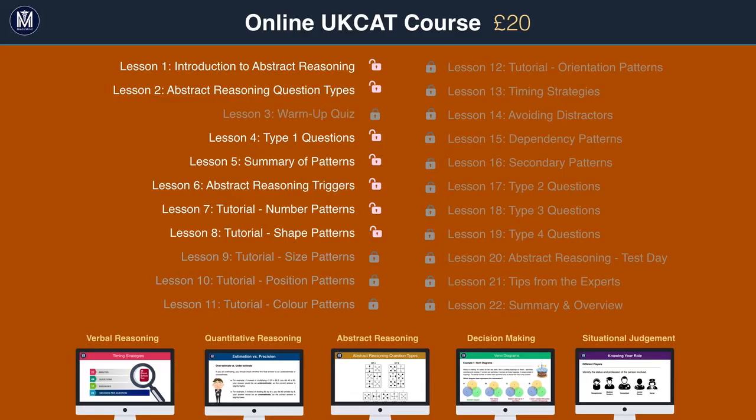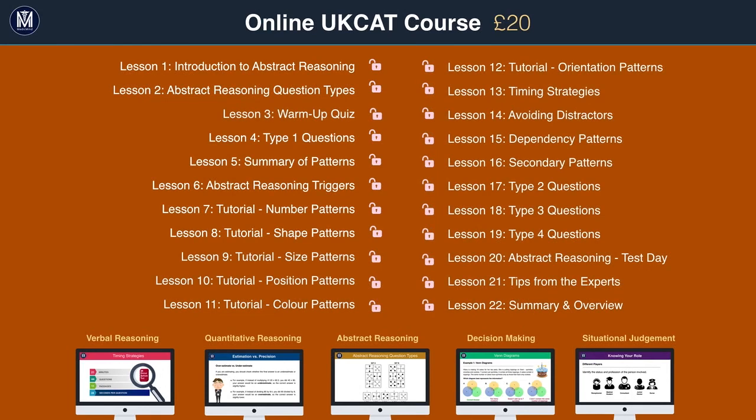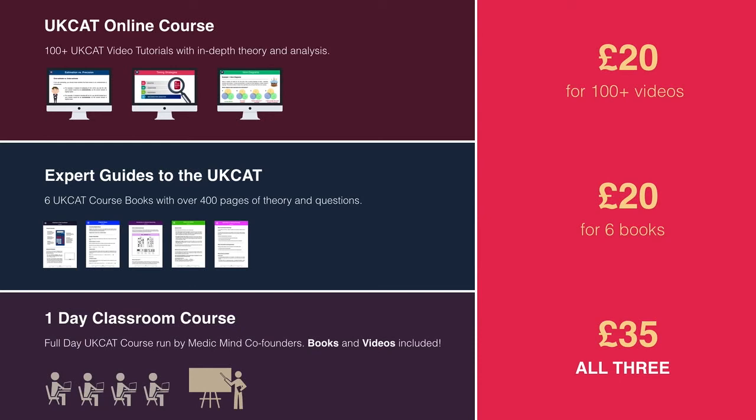Thank you for watching this free Medic Mind tutorial. We aim to make UCAT revision simple, visual but most importantly affordable. For £20 you can unlock all 150 tutorials in our online course. You can also buy our six expert UCAT guides written by a teacher who scored 900 in three sections. Or you could have all 150 video tutorials, each of the six UCAT books and a full classroom course for just £35.